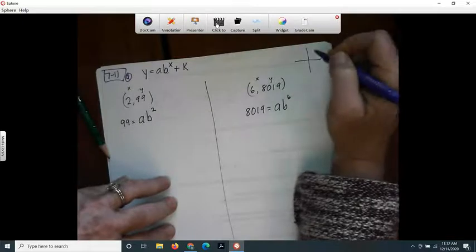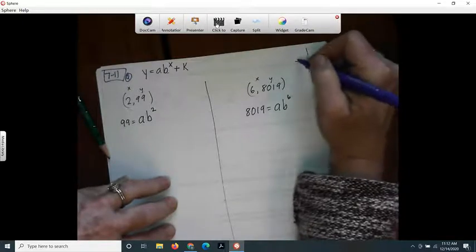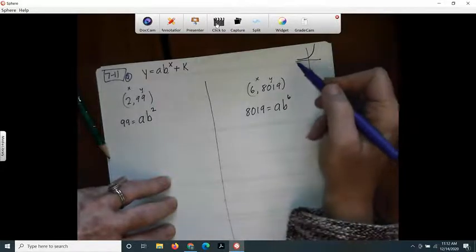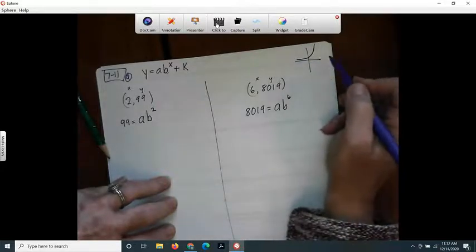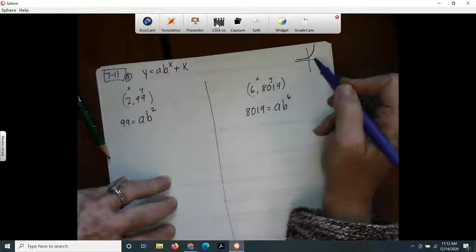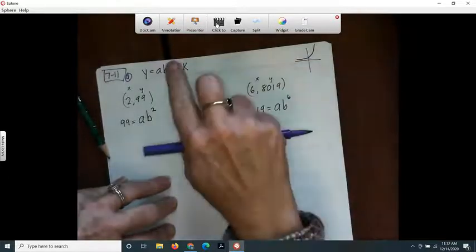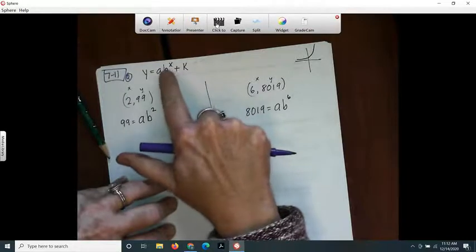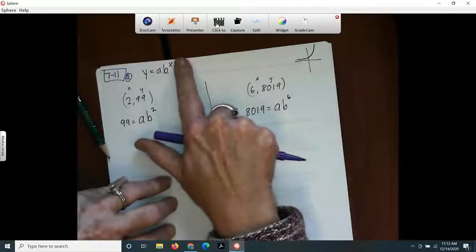The parent function has the horizontal asymptote at 0, so we don't need that k on there. So we're just going to use a model of y equals a times b to the x plus 0, which is just y equals a times b to the x.